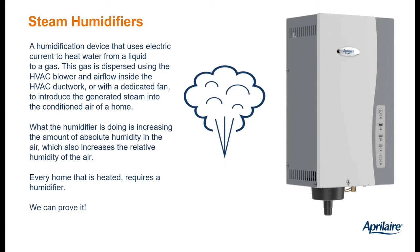Our steam humidifiers use electricity to heat water to boiling and then into steam. The steam then travels down a steam tube and either gets introduced into the HVAC ductwork — with the HVAC blower absorbing the steam and dispersing that humidified air throughout the home — or, towards the end of the webinar, we'll talk about a fan pack that gets installed separate from the HVAC system with its own small fan. Conceptually, what we're doing is adding absolute humidity — grains of moisture, molecules of water — which increases the relative humidity of the home for occupant comfort and health, as well as wood furnishings and musical instruments.